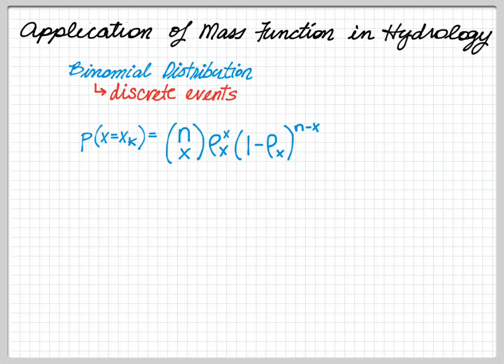So when you look at a binomial distribution, the equation looks like this, where the probability of x equaling xk is equal to n choose x times the past probability raised to the x power times 1 minus the past probability raised to the n minus x.